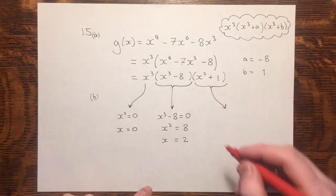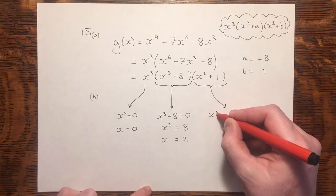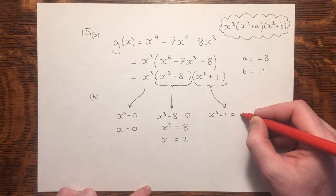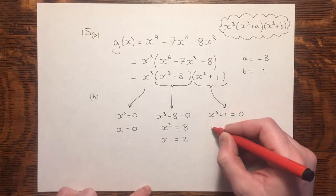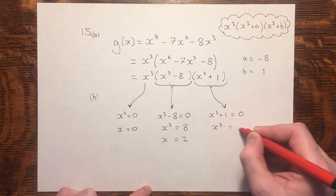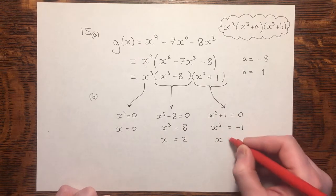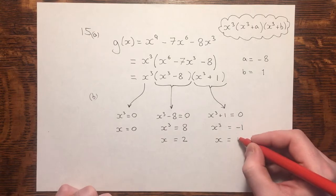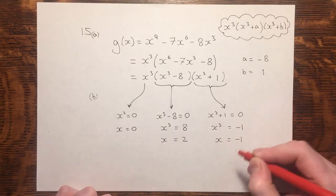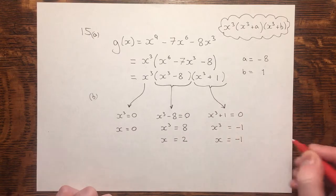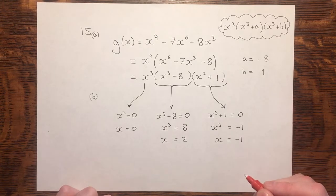Our final factor we will also set equal to 0. Rearranging, and then cube rooting. The cube root of minus 1 is minus 1, because minus 1 times minus 1 times minus 1 gives us minus 1.